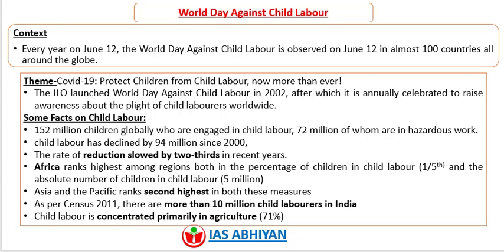Some facts on child labor: around 152 million children globally are engaged in child labor, out of which 72 million are in hazardous work. Child labor has declined by 94 million since 2000, though the rate of reduction slowed by two-thirds in recent years. Africa ranks highest among regions both in percentage of children in child labor — one-fifth — and in absolute numbers. As per Census 2011, there are more than 10 million child laborers in India, concentrated primarily in agriculture at around 71 percent.